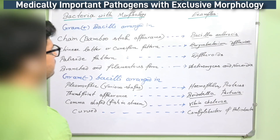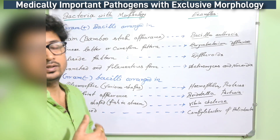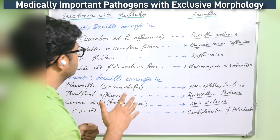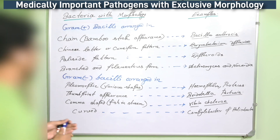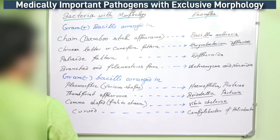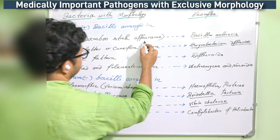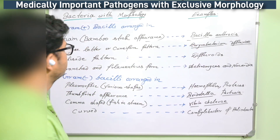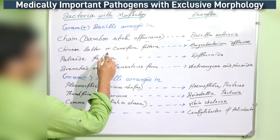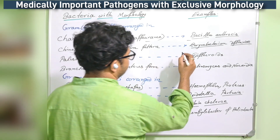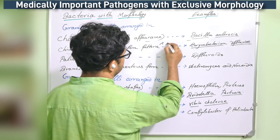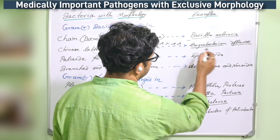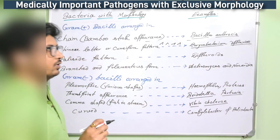Coming to the bacilli section: in the previous section we learned about cocci in special arrangements. Here in gram-positive bacilli, a chain or bamboo stick appearance can be found for Bacillus anthracis. Again, a Chinese letter or cuneiform pattern — cuneiform is a cone-like form — can be found for Corynebacterium diphtheriae.